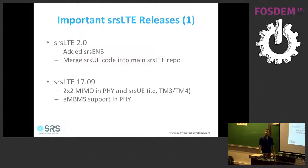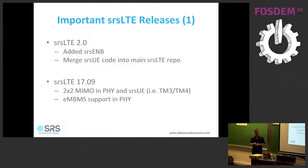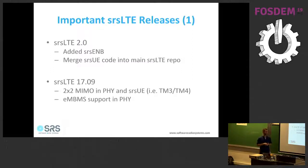In release 1709, we added MIMO support for the PHY layer and also the UE, giving us transmission modes 3 and 4. So you can do 150 megabits downlink with a 20 MHz LTE cell in software running on a mid-range computer. We also added EMBMS, which is a broadcast service for LTE — a base station can transmit a video stream to multiple UEs rather than each UE receiving an individual stream.